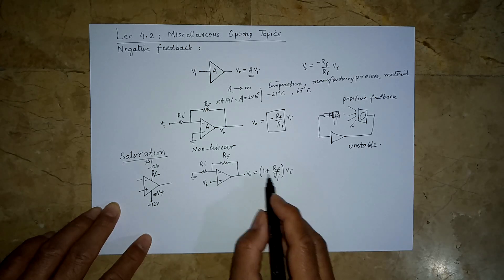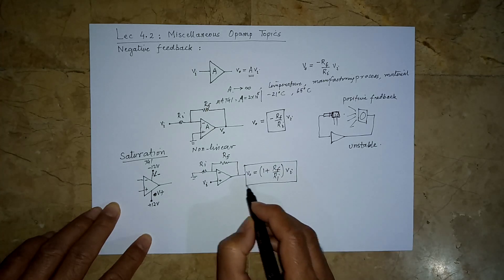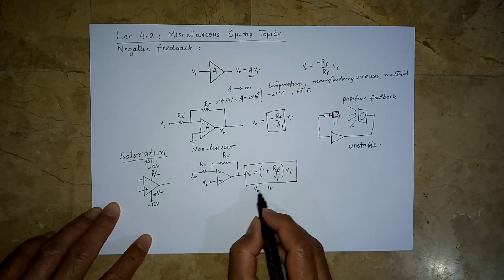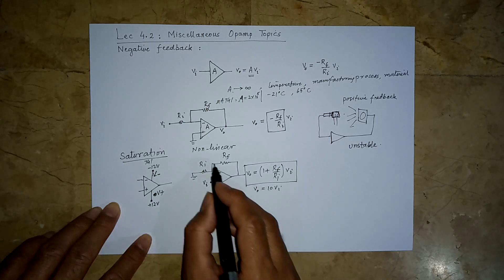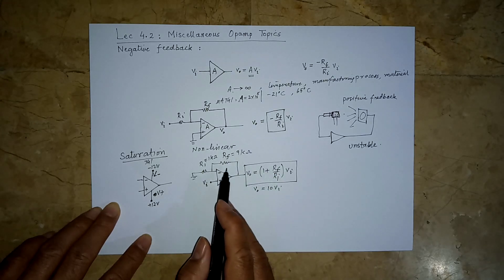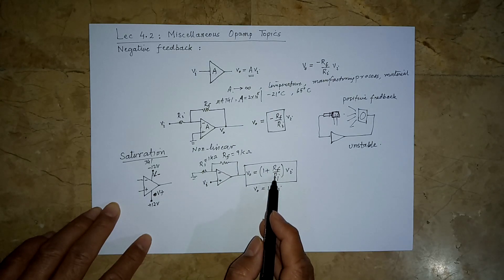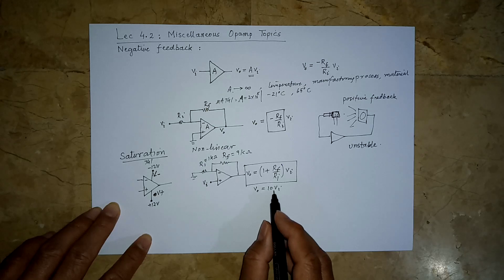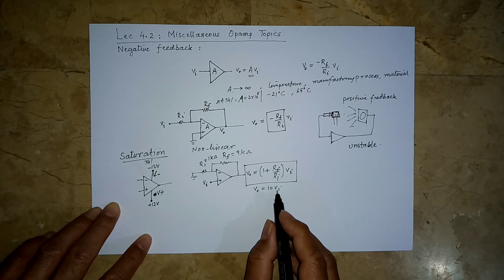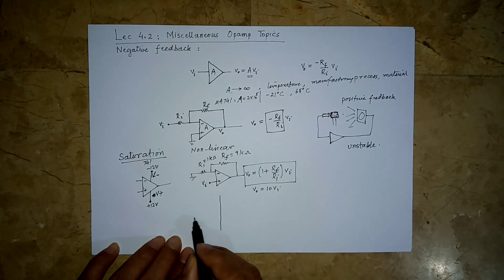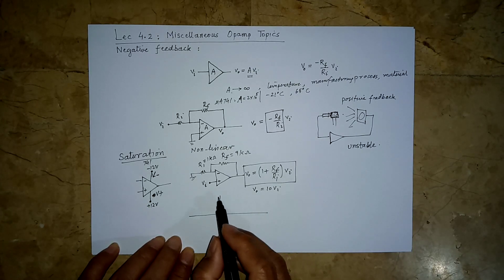If the gain factor is 10, then VO = 10 × VI. To get a gain of 10, suppose RI is 1 kΩ and RF is 9 kΩ, so 9/1 + 1 = 10. In this case, if VI is 1V, VO is 10V; if VI is −1V, VO is −10V; and if VI is 0, VO is 0.